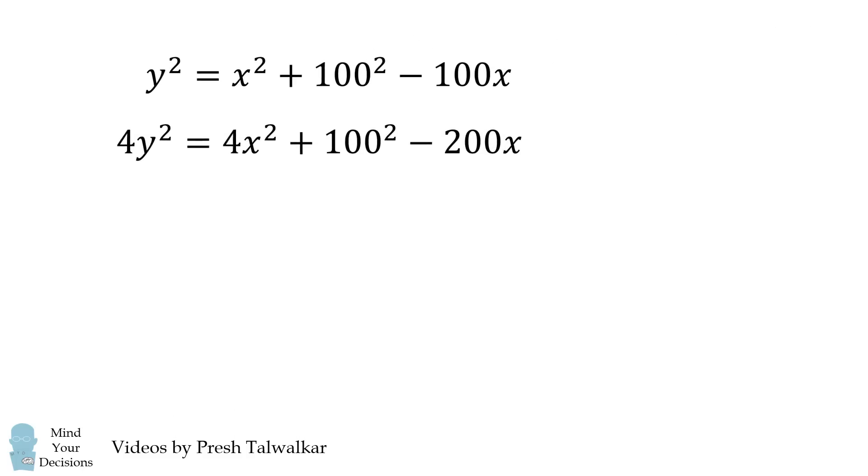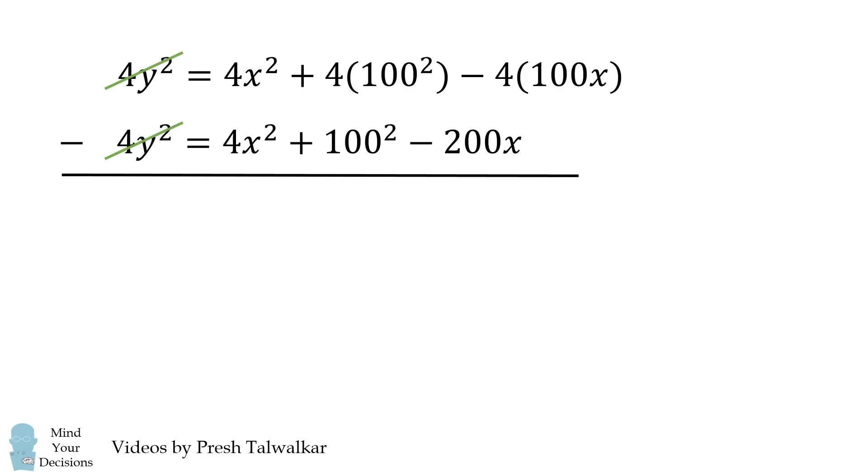Let's cancel out the y squared terms. We'll multiply the first equation by 4, and then we'll subtract the second equation. We'll cancel terms between the equations, and we're left with 0 is equal to 3 times 100 squared minus 200x. We can then solve that x is equal to 150.